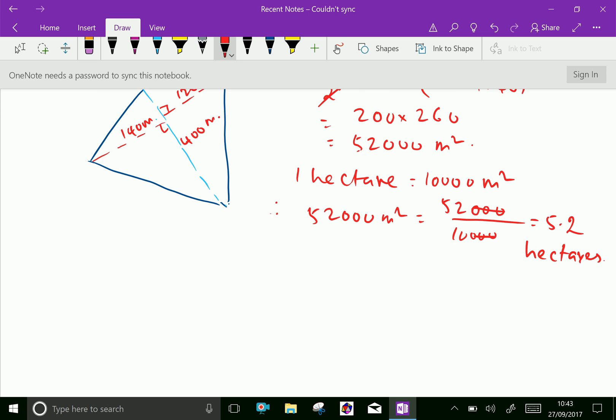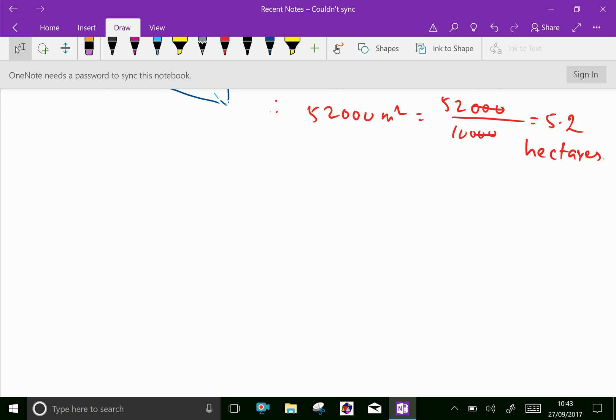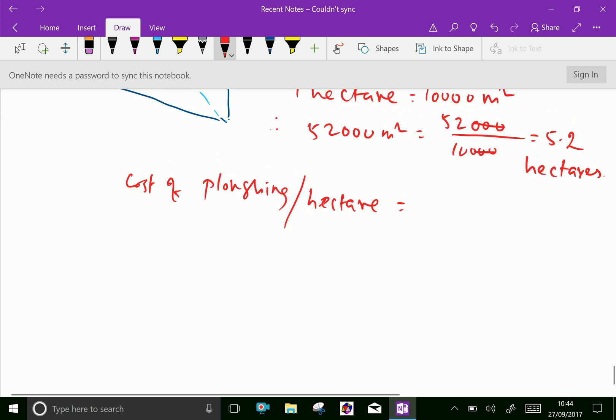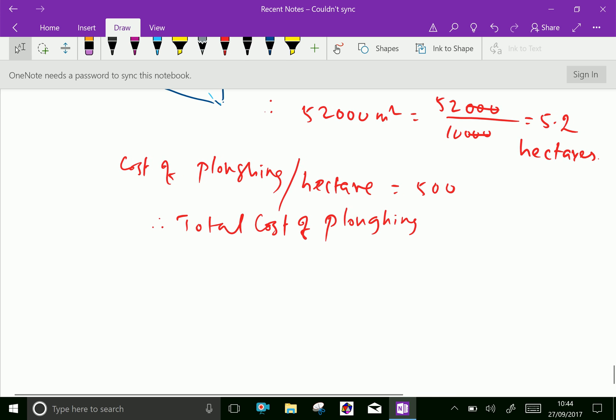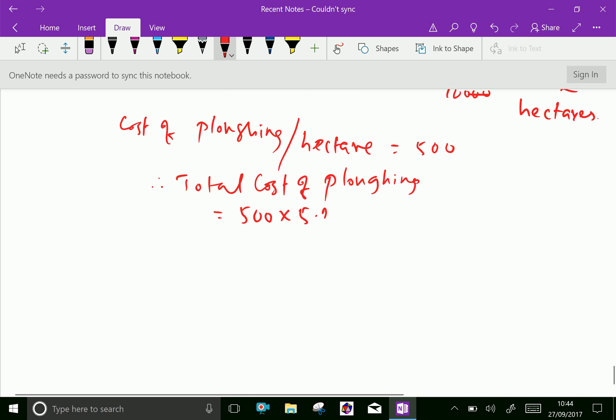Now, cost of plowing the field per hectare equals 500 rupees. Therefore, total cost of plowing equals 500 into 5.2 hectares, which equals rupees 2,600. Thank you.